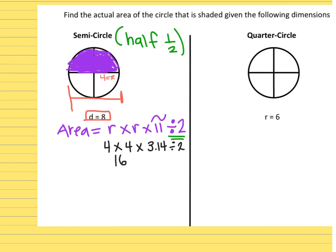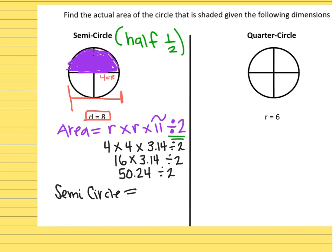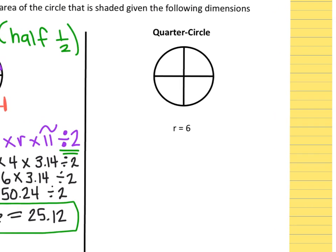4 times 4 is 16, and then we divide by 2 at the end because we're doing half of the circle. 16 times 3.14 equals 50.24, and then we divide by 2. The semicircle area after dividing by 2 is 25.12. It doesn't give us a unit for measuring, but 25.12 square units would be the final answer for the semicircle.